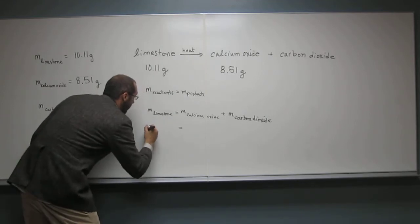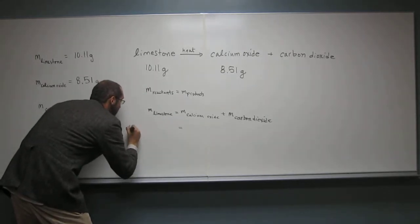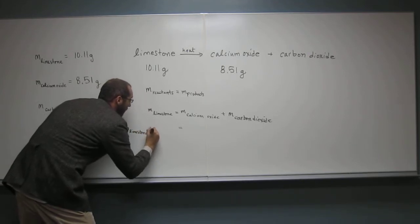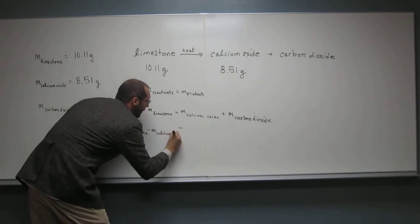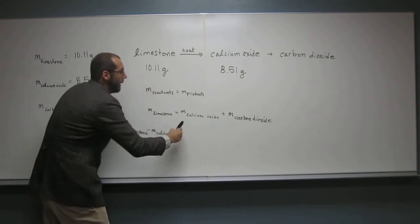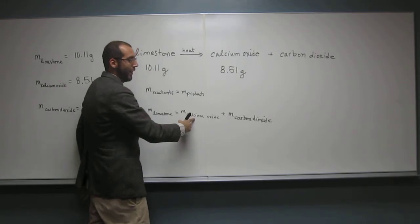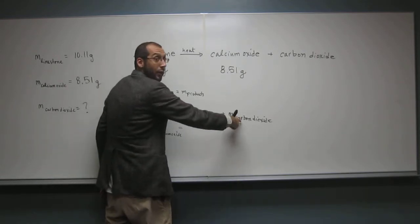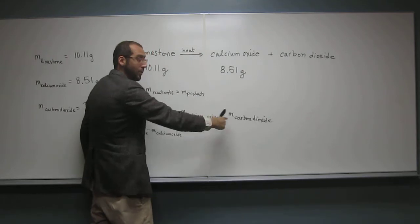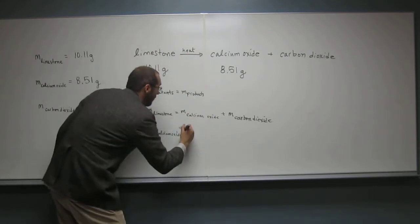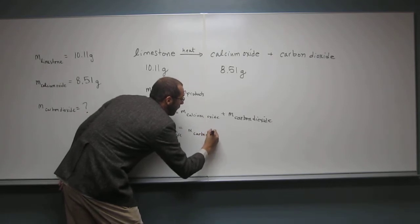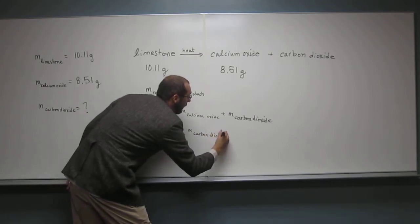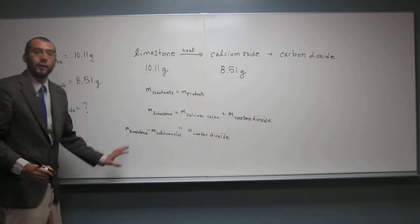we're going to say the mass of the limestone minus the mass of the calcium oxide equals, well, we could say mass of calcium oxide plus mass of carbon dioxide minus mass of calcium oxide, which would cancel that out, right? So it would equal the mass of the carbon dioxide. Does that make sense?